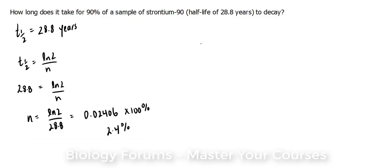Our problem is asking how long does it take for 90% of a sample of strontium-90 to decay. So 90% of it will go away, leaving only 10%. Here we have an exponentially decaying problem, so we're going to use the following formula.